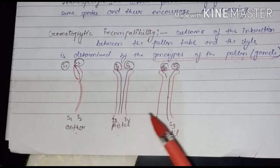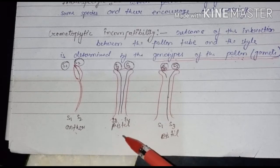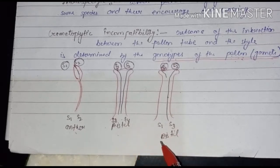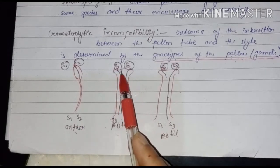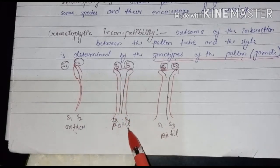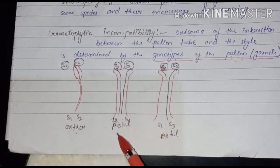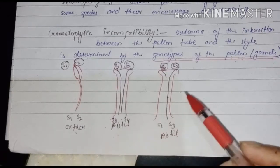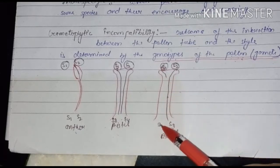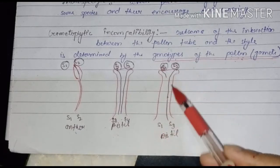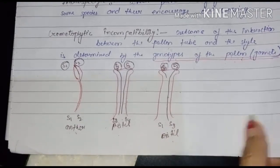So simply, when the alleles are matching with each other, fertilization does not occur. When the alleles are not matching, fertilization occurs. In the second example, S1 and S3, S2 and S4 are all different, so the pollen tube comes out — fully compatible. In the third case, S1 and S1 are the same so the pollen tube does not come out, but S2 and S3 are different so it is only partially compatible.